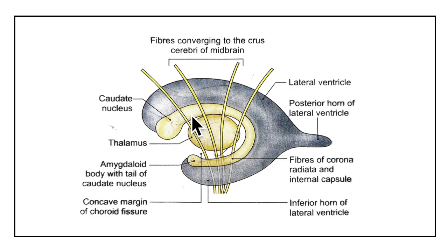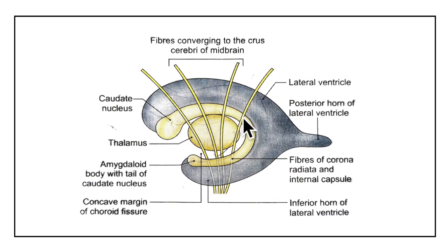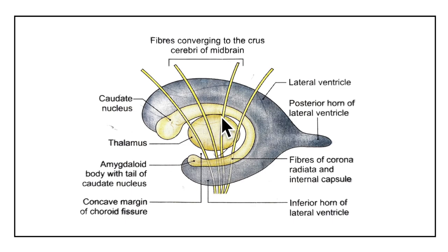The body of the caudate nucleus forms the floor of the central part of the lateral ventricle. It lies medial to the posterior limb of the internal capsule. It is separated from the thalamus by the thalamostriate vein and the stria terminalis. Superiorly, it is related to the fronto-occipital bundle as well as the corpus callosum.